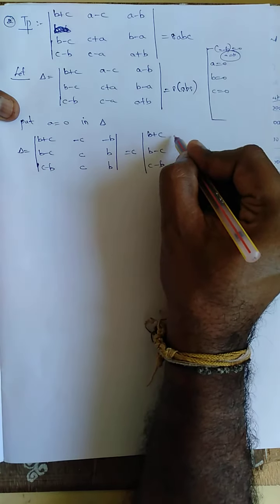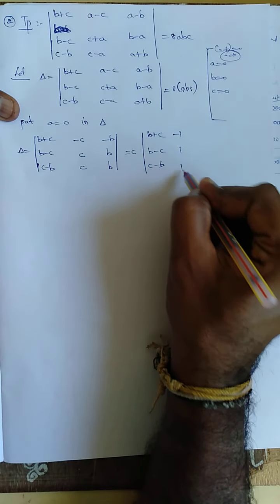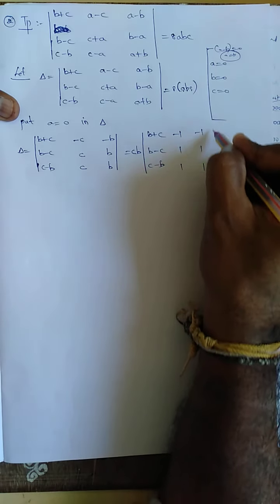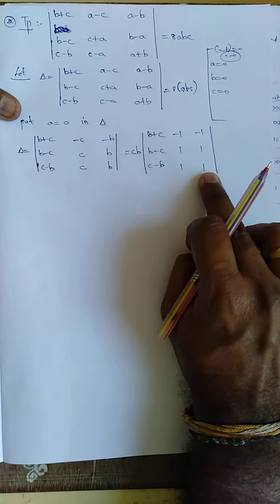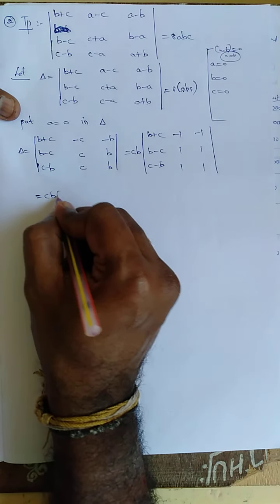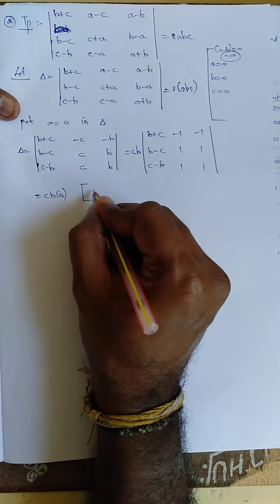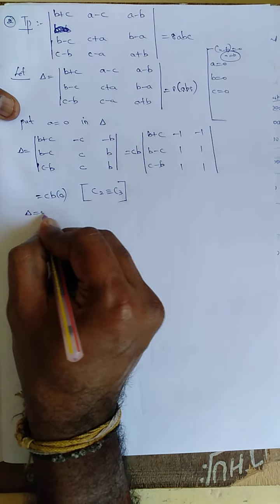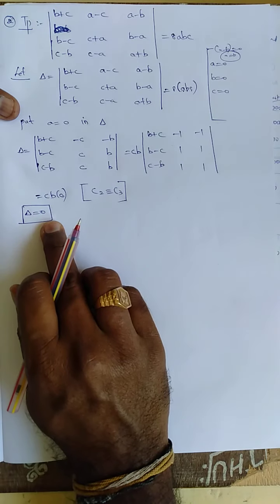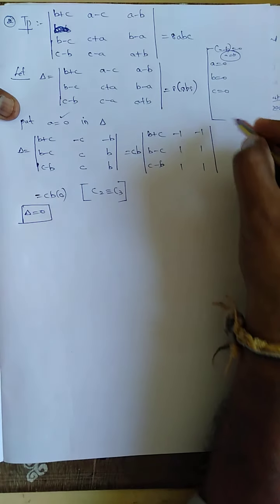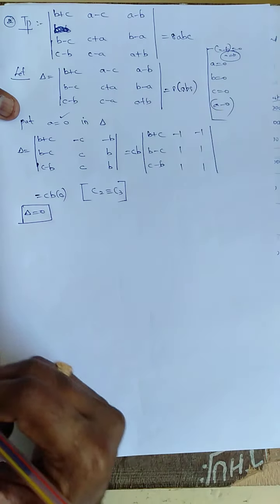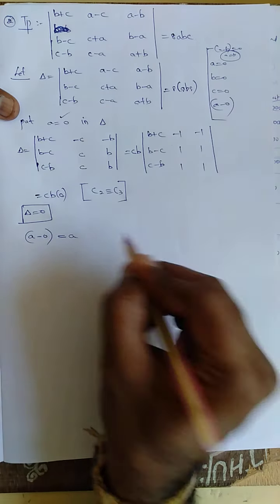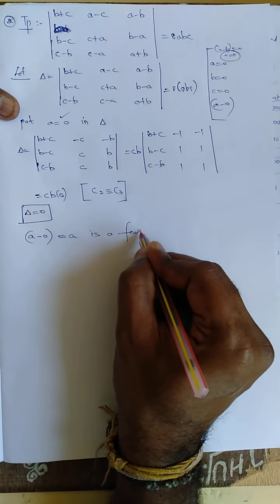Take c common from one group — it becomes (-1, 1, 1). Take b common from another — it becomes (-1, 1, 1). Since any two columns are equal, c2 is identical to c3. Therefore delta is equal to 0. If delta equals 0, then (a - 0) = a is a factor of del.